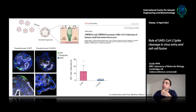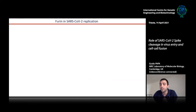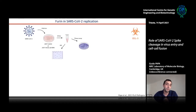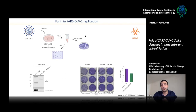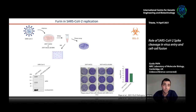We then asked whether furin is important for other steps of SARS-CoV-2 replication beyond spike cleavage. We infected 293T cells or 293T furin-knockout cells, let the virus replicate for 48 hours, and quantified viral particles by plaque assay and Western blot. Surprisingly, knocking out furin impacts but does not completely abolish viral infectivity. This confirms that furin is not essential for spike cleavage, infection, or SARS-CoV-2 replication overall.